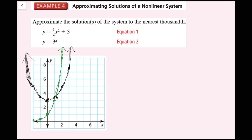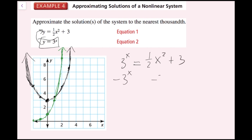I can see the two functions are going to intersect between x equals 1 and x equals 2, much closer to 1. To find this with a scientific calculator, I'll do some algebra — plug one equation into the other and set it equal to zero: 0 equals negative 3 to the x plus one half x squared plus 3.